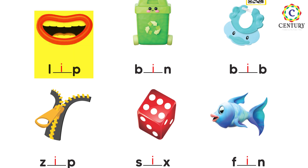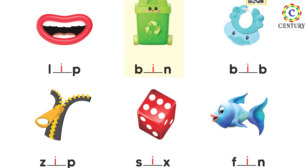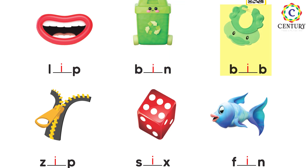Okay students, jaisi ke 'lip' — lip mein aap dekho what is missing. 'L' bhi hai, 'P' bhi hai — kya missing hai? Yes, it's 'i'. So aapne yahan pe 'i' likhna hai. Ab saath dekho — 'bin' — B, I, N — to what is missing? It's 'e' yaani ka letter 'i' missing hai, kyunki 'e' is the sound of 'i'.